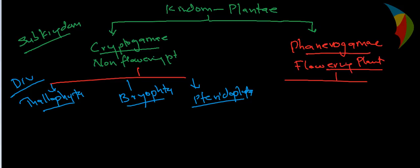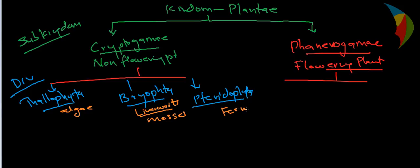Under Thallophyta, we can say it covers all the algae. Bryophyta covers all the liverworts and mosses. These come under the Bryophyta division. The third division covers ferns. Algae are totally aquatic, while plants under Bryophyta are amphibian-type plants.